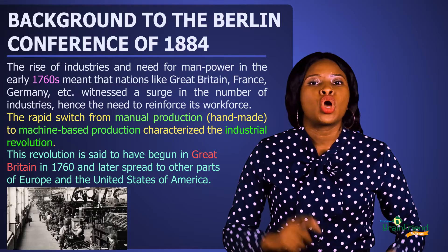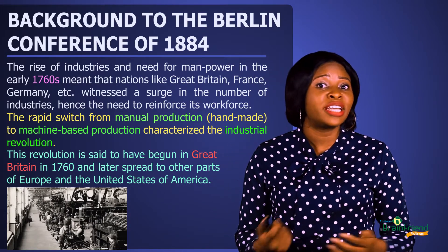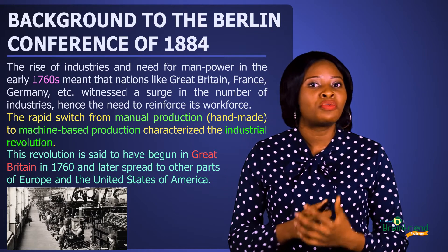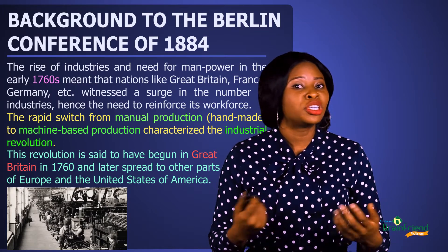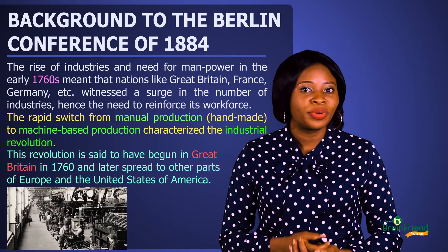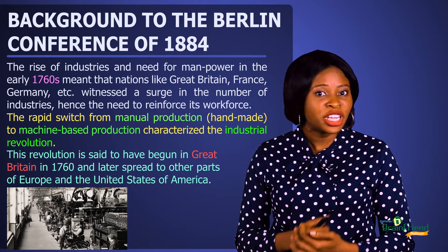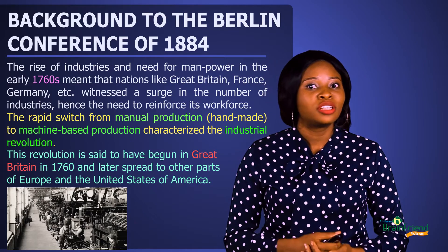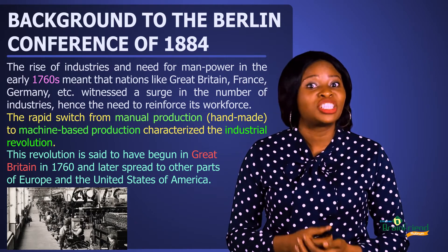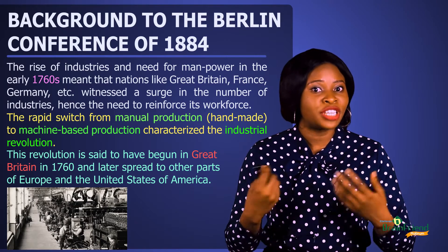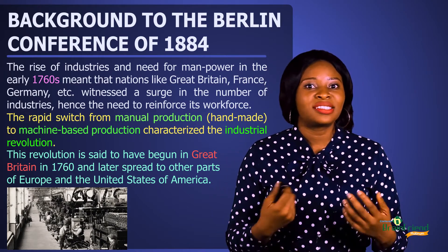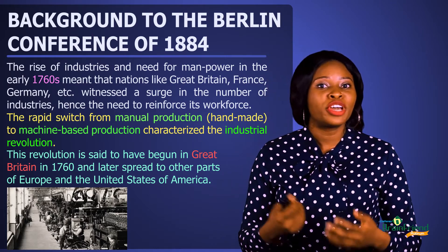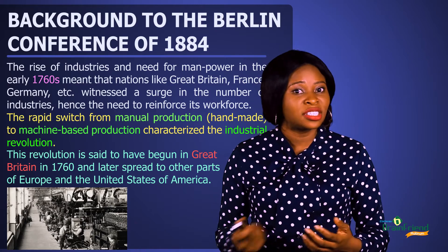Let's look at the factors that led to the Berlin Conference. One of the major factors that led to the Berlin Conference of 1884 to 1885 was the Industrial Revolution. The Industrial Revolution refers to the rapid change from handmade production to machine-based production. In Europe in the 18th century, nations like Great Britain, France, Germany, Portugal, Spain, and the likes experienced a rise in industries and they needed natural resources. The Industrial Revolution started in Great Britain in the year 1760 before it spread to other parts of Europe and the United States of America.